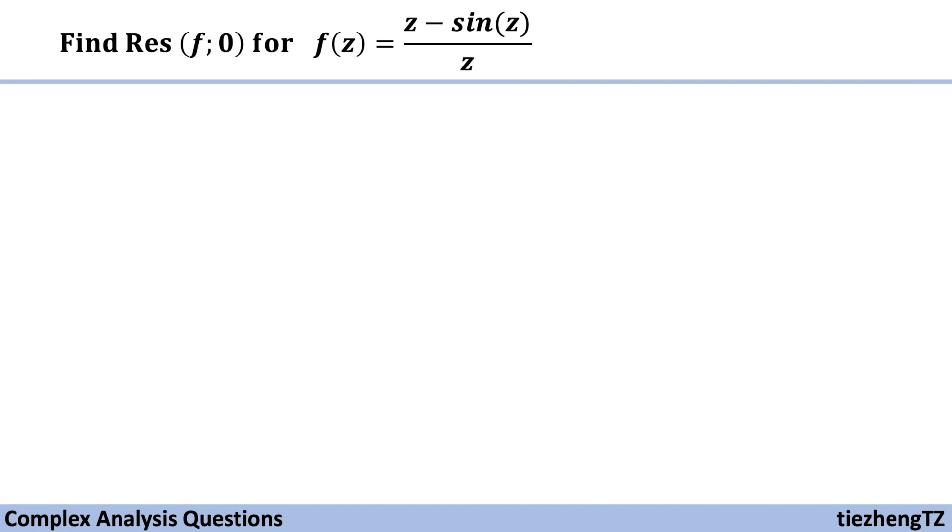This question is to find the residual for f(z) equals z minus sin(z) over z when z0 is 0. We have already introduced one example that the residual means the coefficient of 1 over z minus z0 for this function in the Maclaurin series representation form.